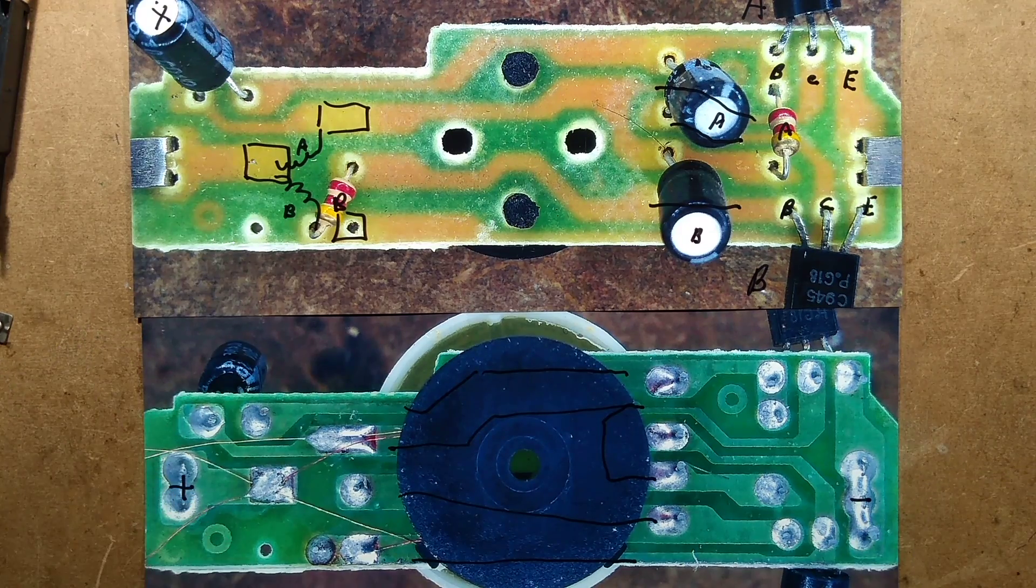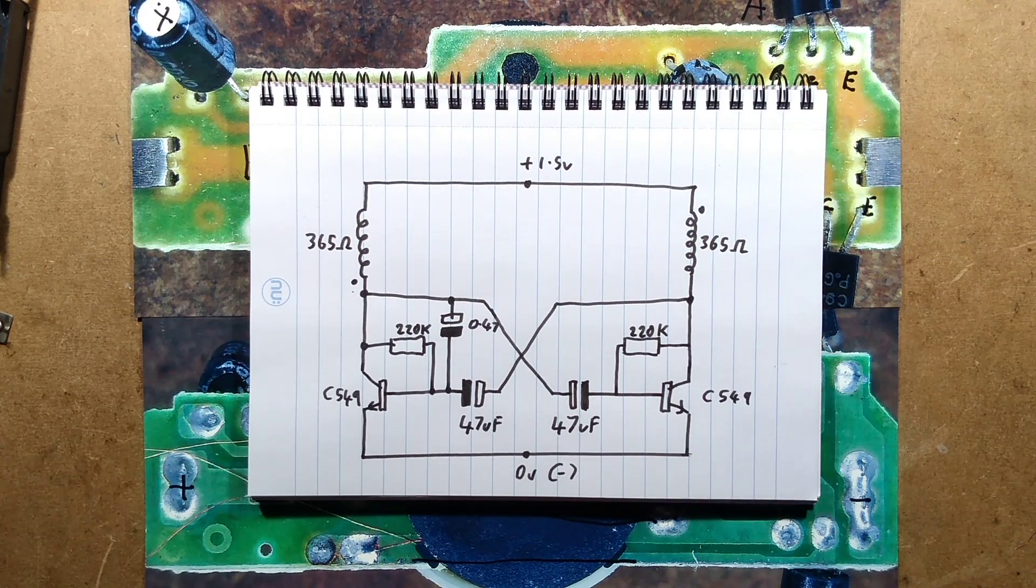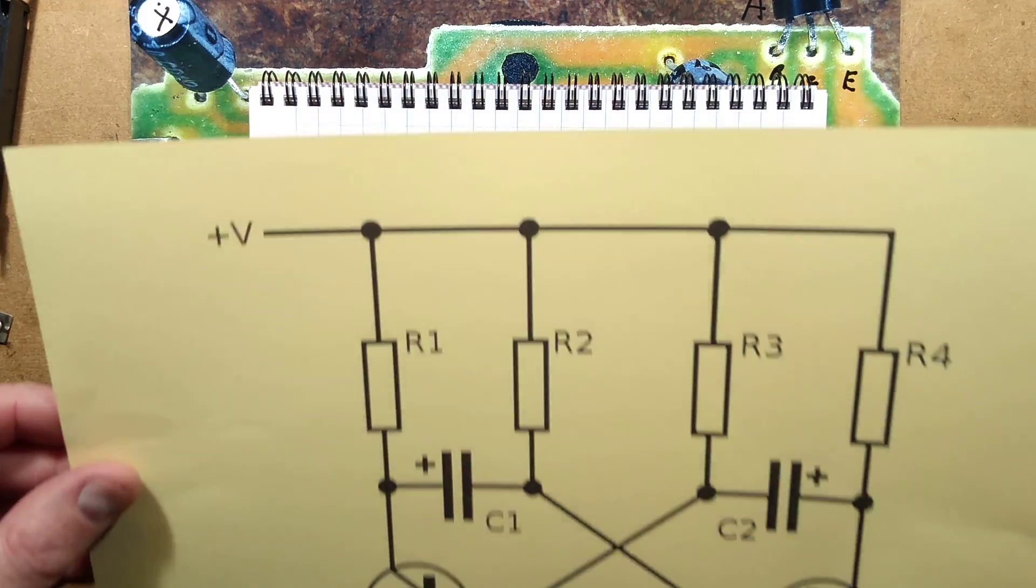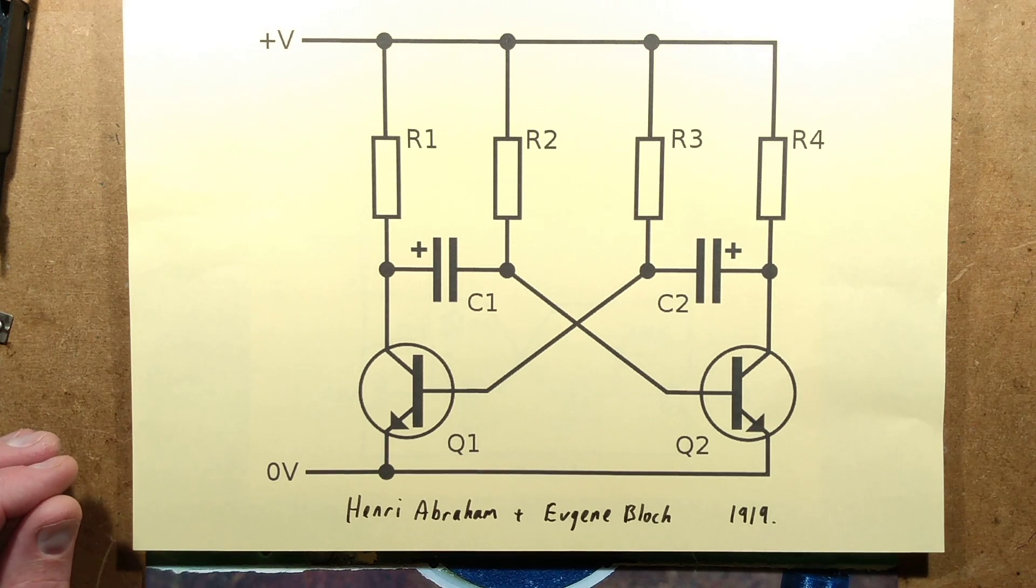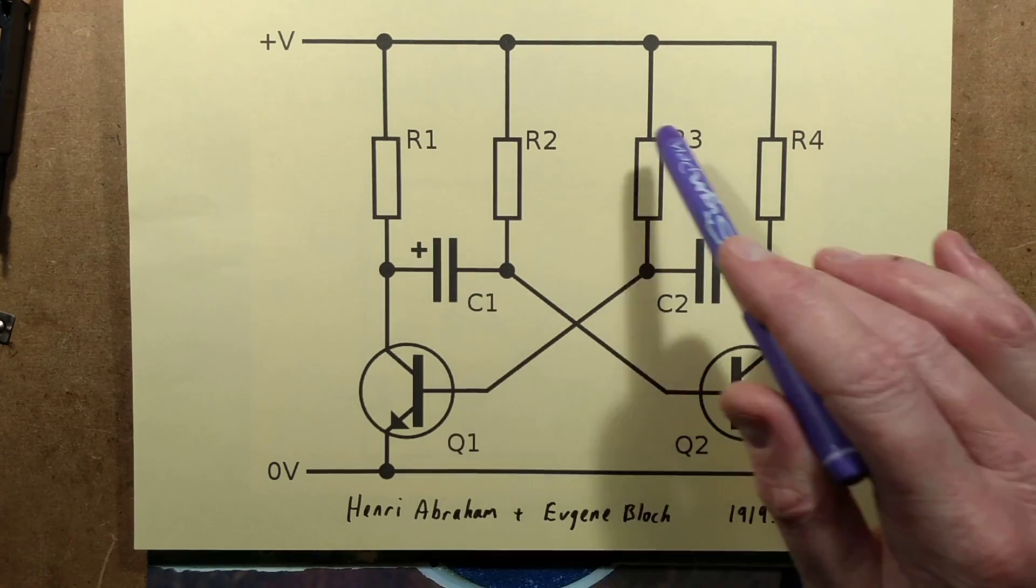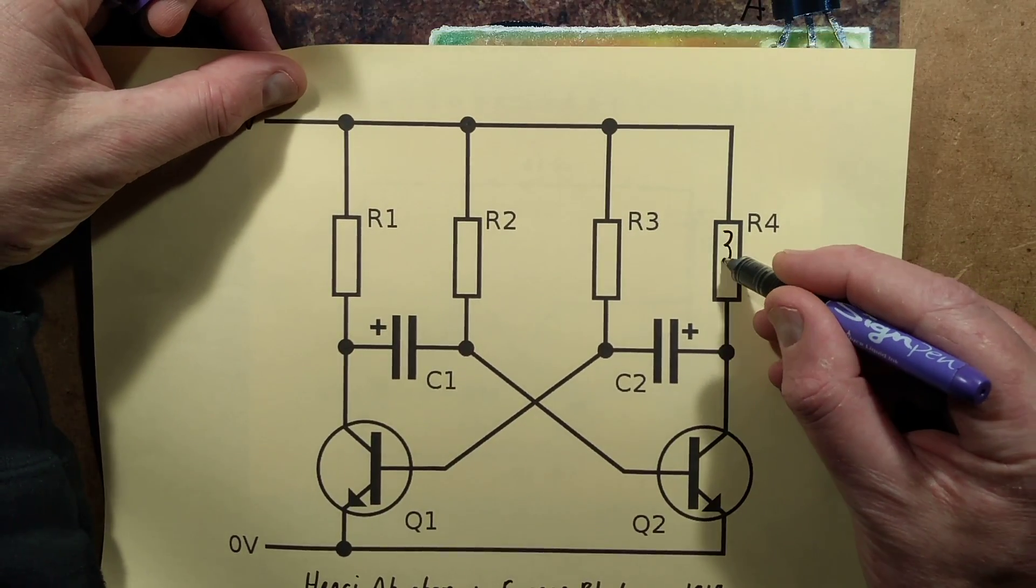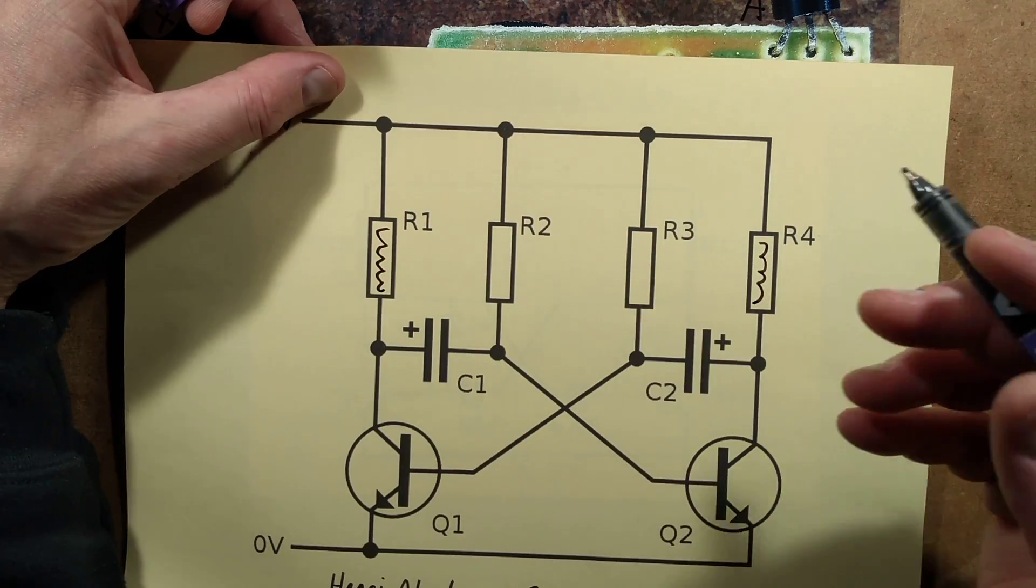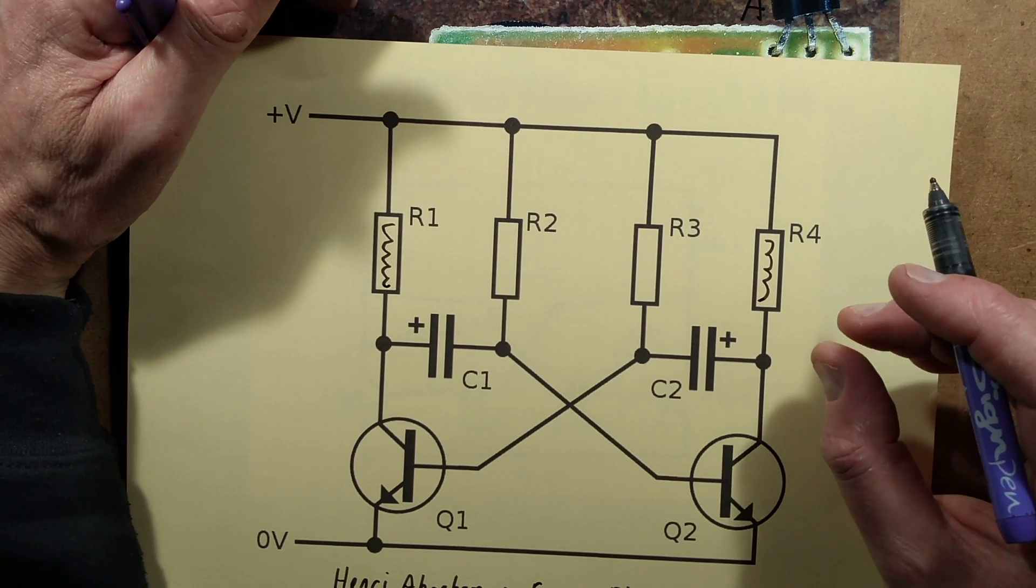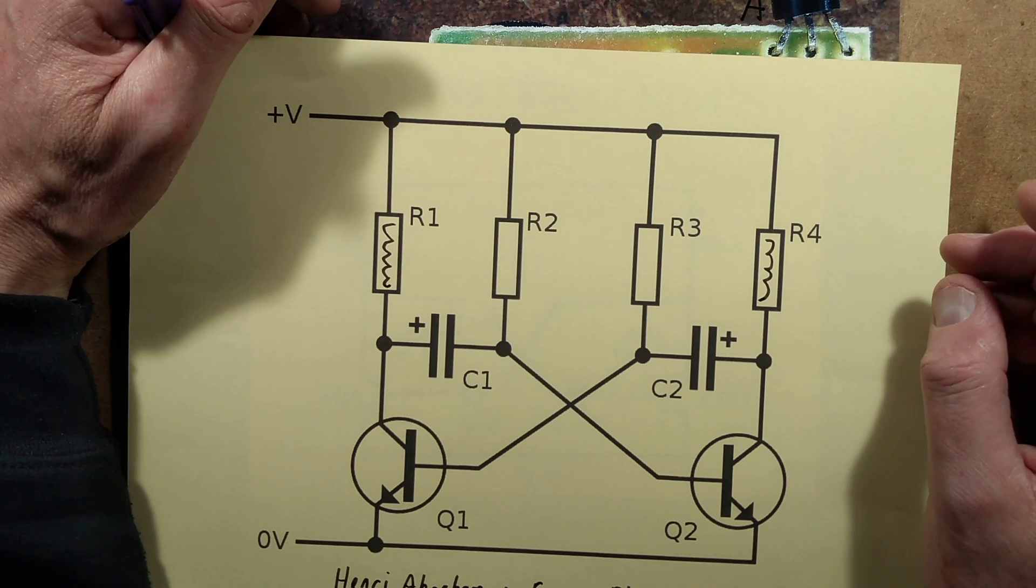The circuit when reverse engineered is kind of interesting. Does it look familiar? It might look familiar because it's very similar to what's called an astable multivibrator. Let me bring in an astable multivibrator courtesy of Wikipedia. This is a classic multivibrator design. In this case, instead of using these resistors, they've used the coils. The coils actually have quite high resistance. They measured roughly about 365 ohms each.